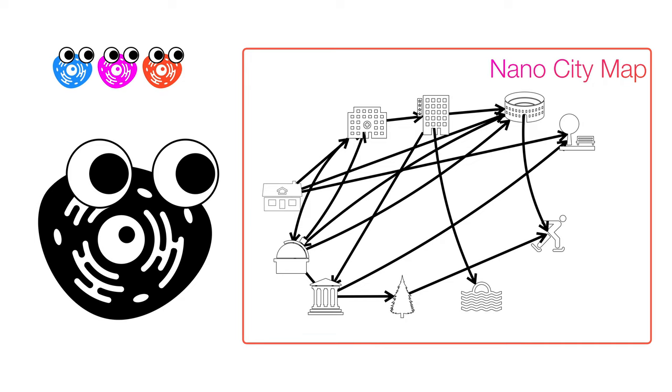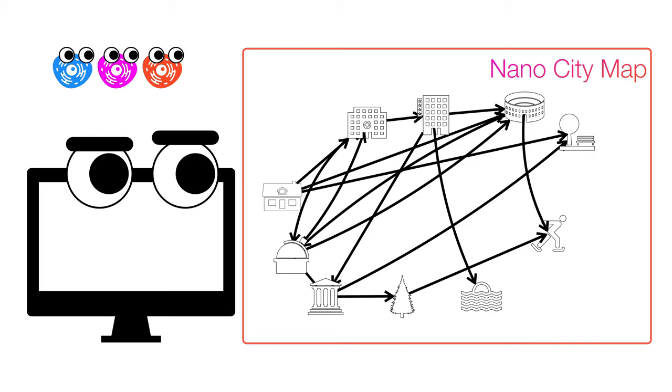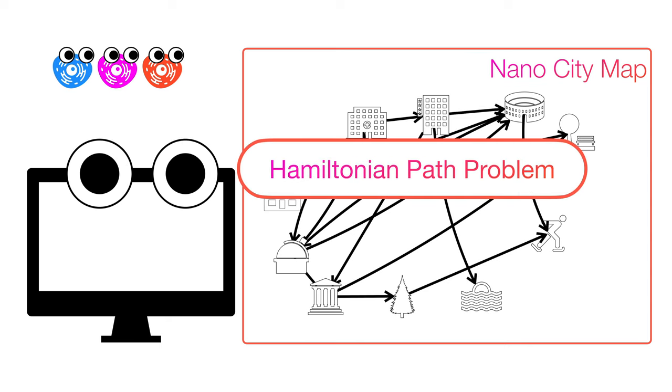In fact, it's not only difficult for us, but even computers have a hard time solving such a problem. And this is known as the infamous Hamiltonian path problem. Here's why it's so difficult.